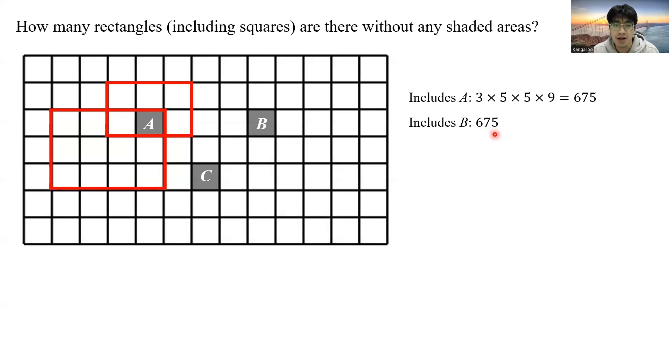Now for the rectangles that include C, we have three lines at the bottom, five lines at the top, seven lines to the left, and seven lines to the right. So there are 735 such rectangles containing the shaded area C.